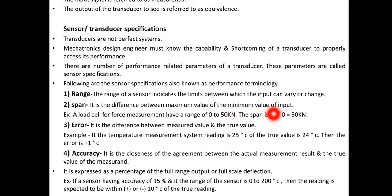For example, a load cell used for force measurement have a range of 0 to 50 kilo newton. Then the span is 50 minus 0, which means 50 kilo newton.